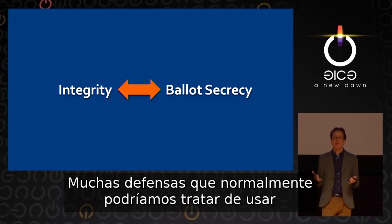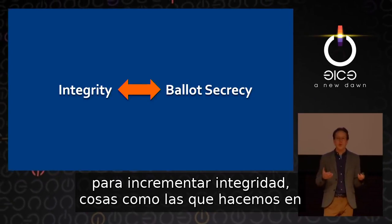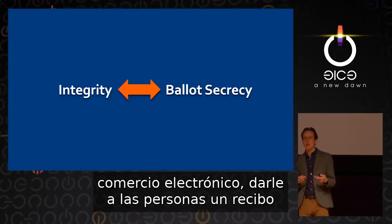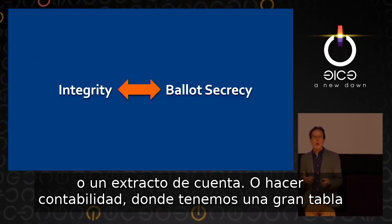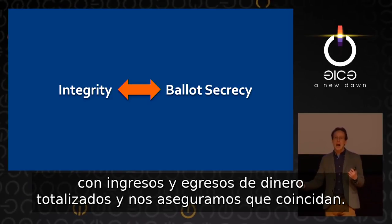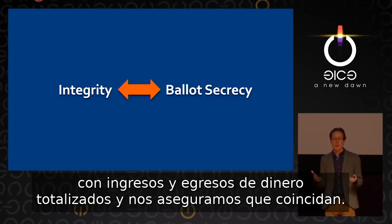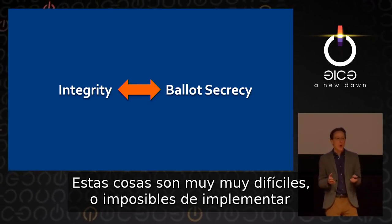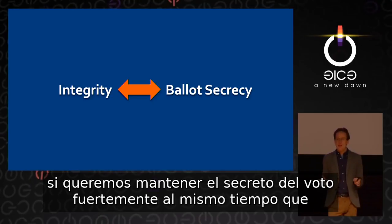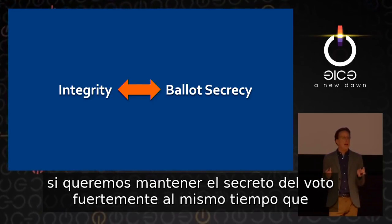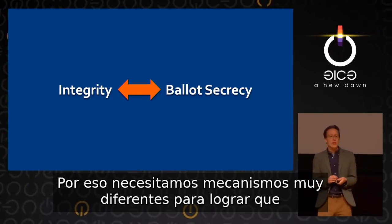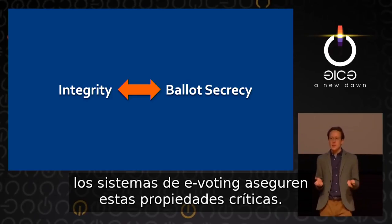Many defenses we might normally try to use to increase integrity — things like sending people a receipt or a bank statement, or doing accounting where money in and out is totaled — are very difficult or impossible to implement if we want to maintain a secret ballot. These two properties, integrity and ballot secrecy, are in tension, and we need very different mechanisms to achieve an e-voting system that provides both.